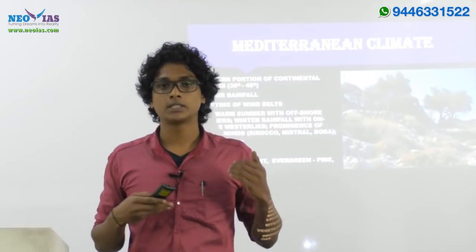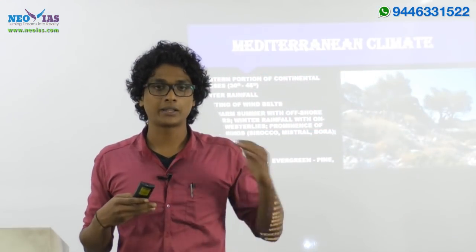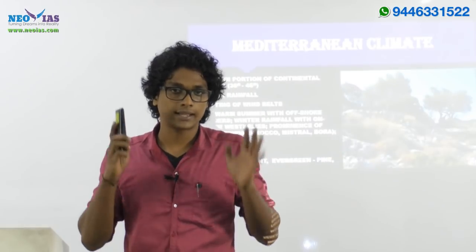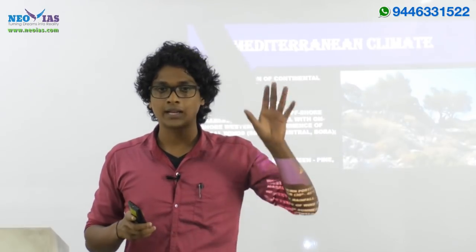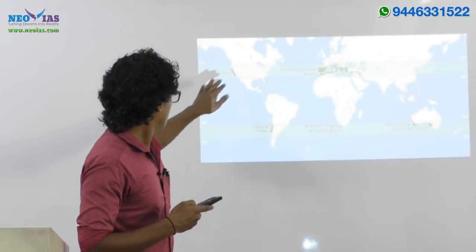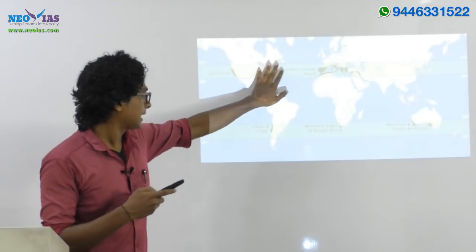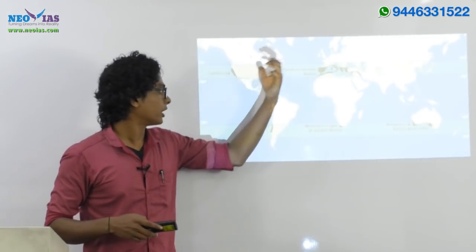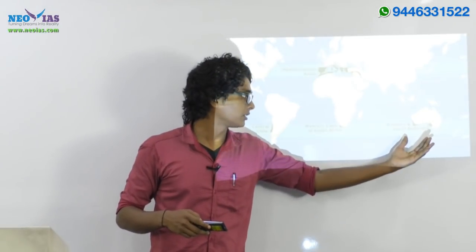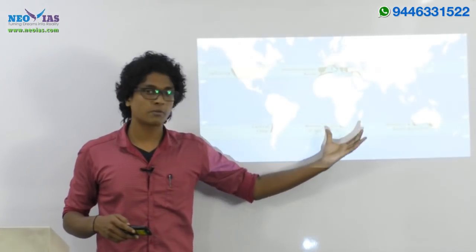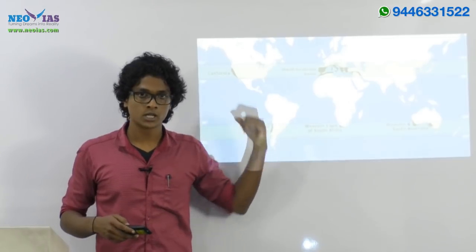In this session I am going to discuss about Mediterranean type of climate. First of all let's take a look at where this type of climate is distributed. The regions are California, Mediterranean basin, western and southern Australia, western Cape of South Africa, and central Chile.